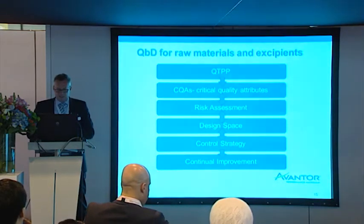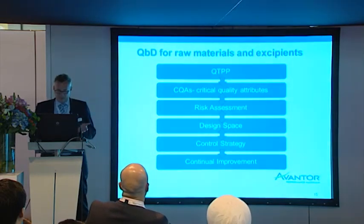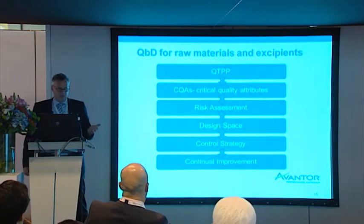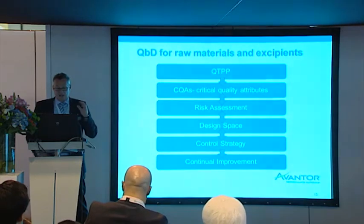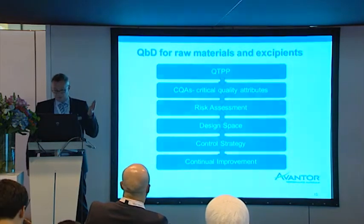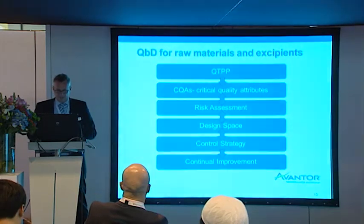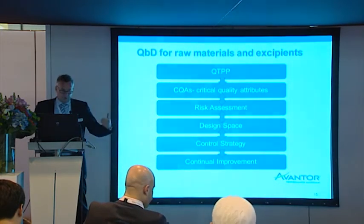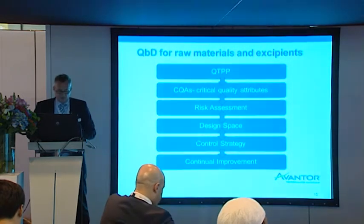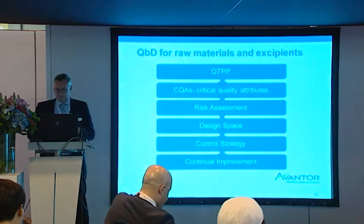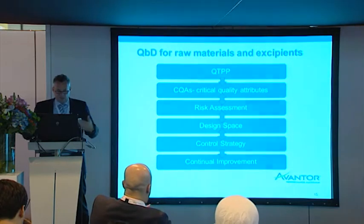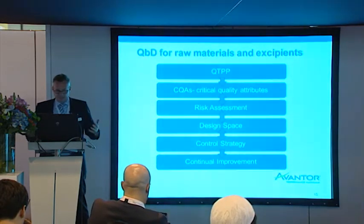Quality by design means you understand your protein — what are the attributes that are influencing its quality. After that, you do a risk analysis to understand what can happen when you don't control it. You design your space in which you want to control these attributes, you design your analytical controls, and finally you validate it. This is all prescribed by the FDA.